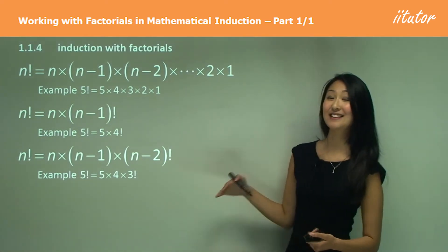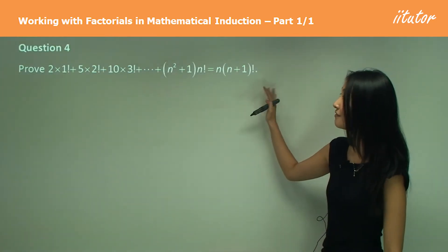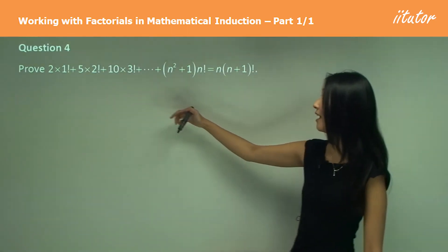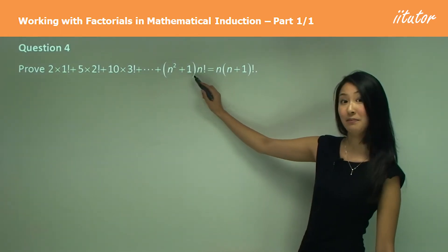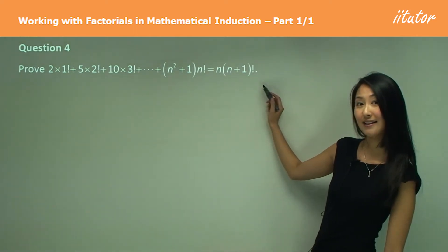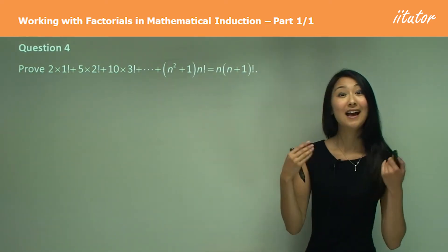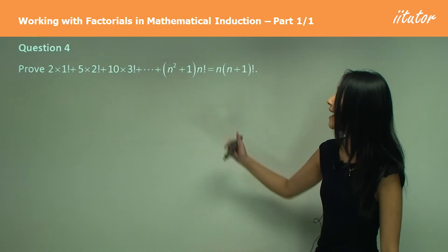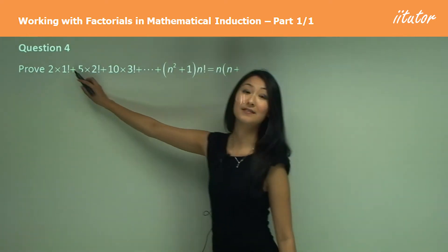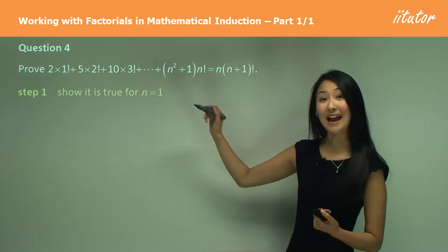I think the best way to show this is by using a question. In question 4, we want to prove that 2 times 1 factorial plus 5 times 2 factorial, and so on, up to the general term (N²+1)·N factorial equals the right hand side. The first thing we do in step 1 is work out what the first value of N is — it's going to be 1, since we have 1 factorial and 1²+1 gives us 2. So we want to show it is true for N equals 1.